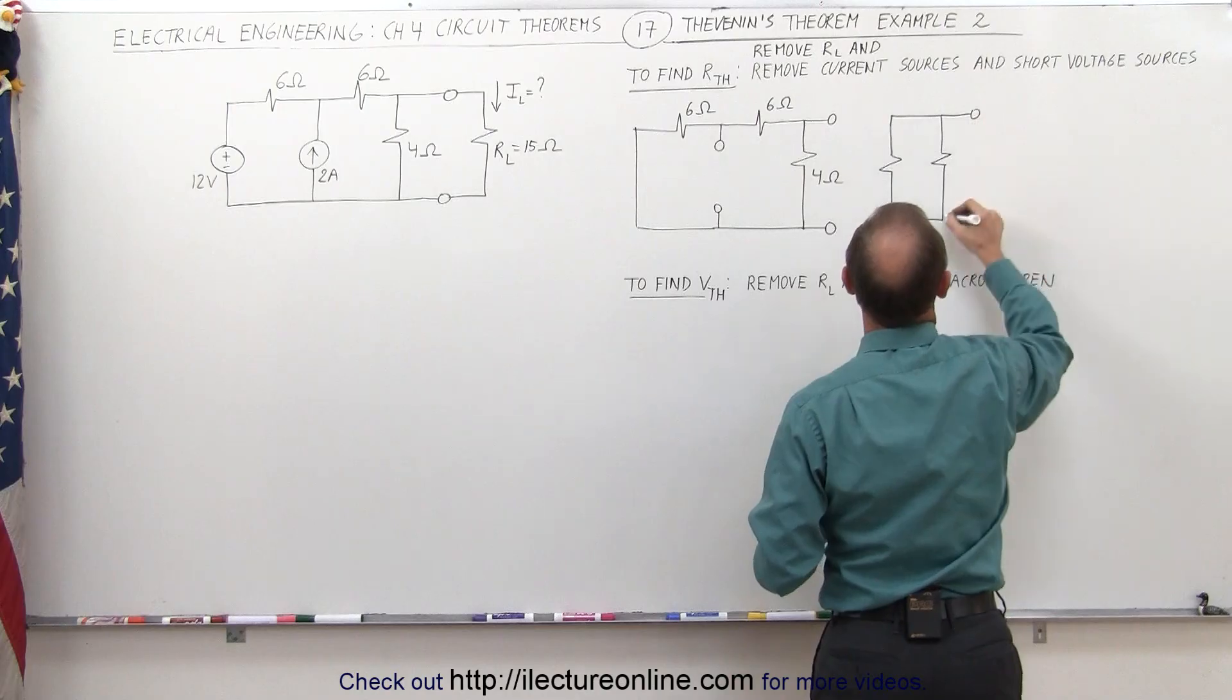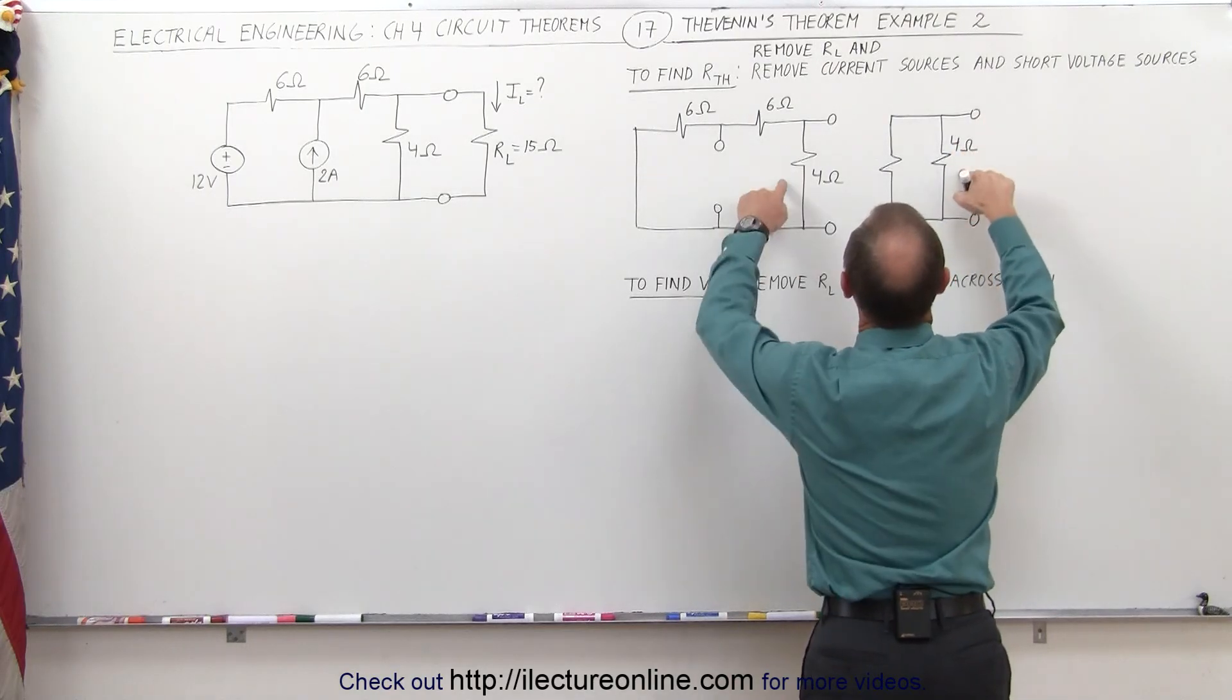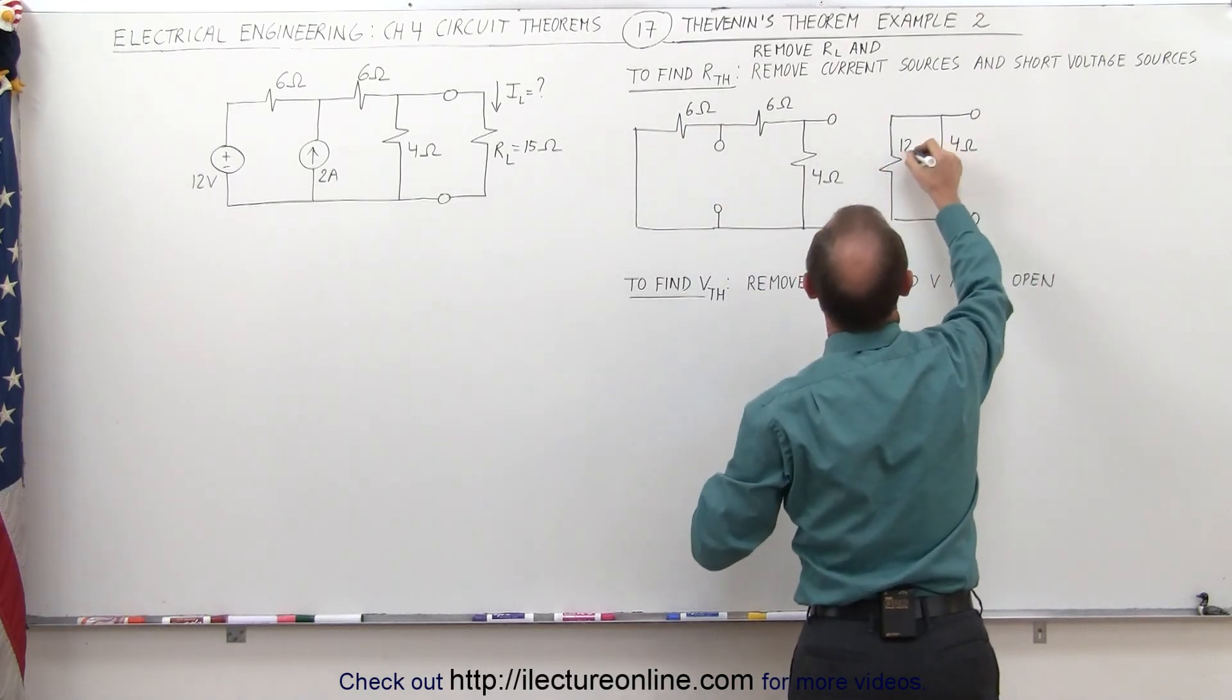And then we have the terminals here. So this is 4 ohms, that's this resistor. Those two combined give us a 12 ohm resistor.